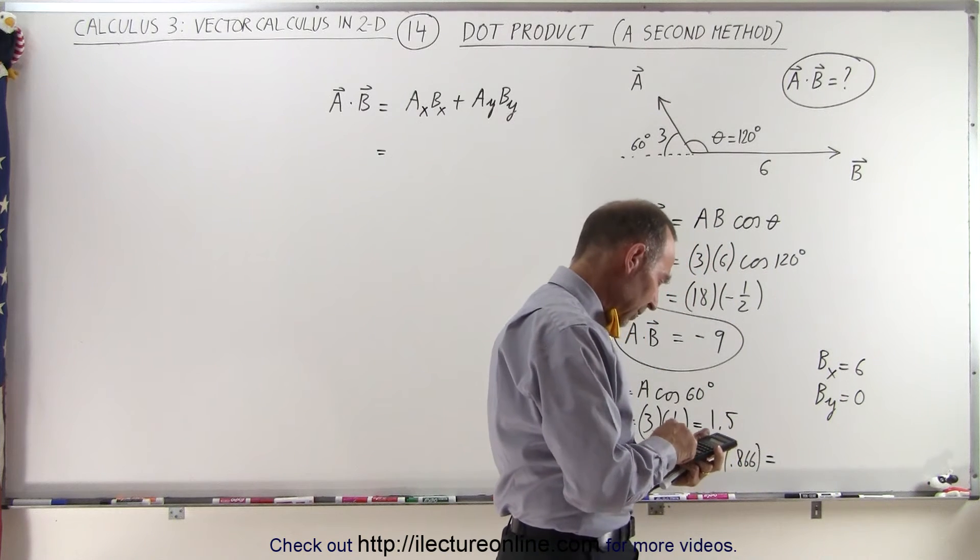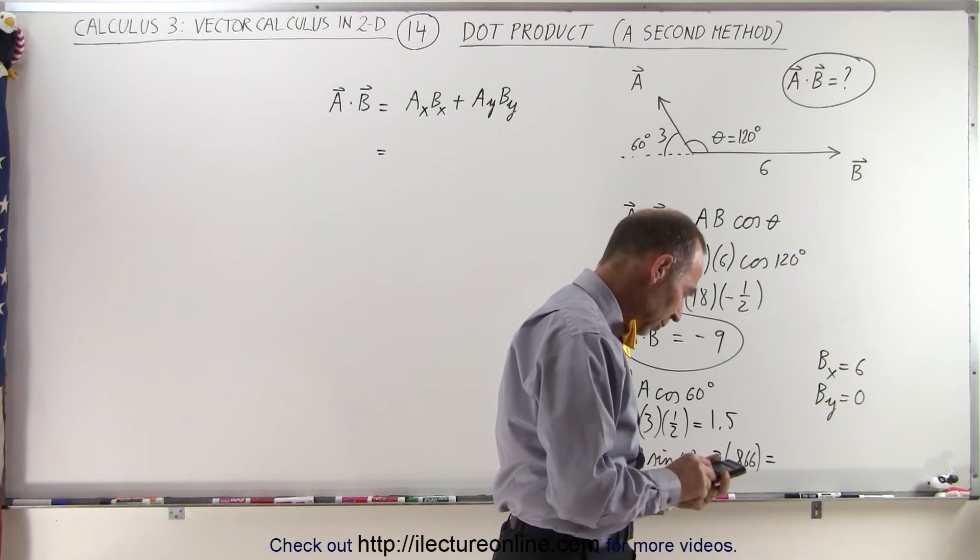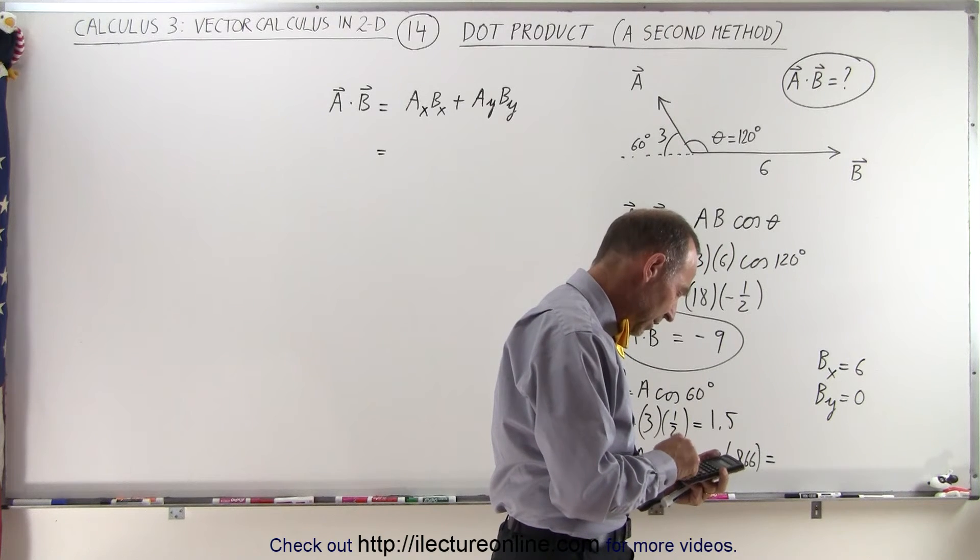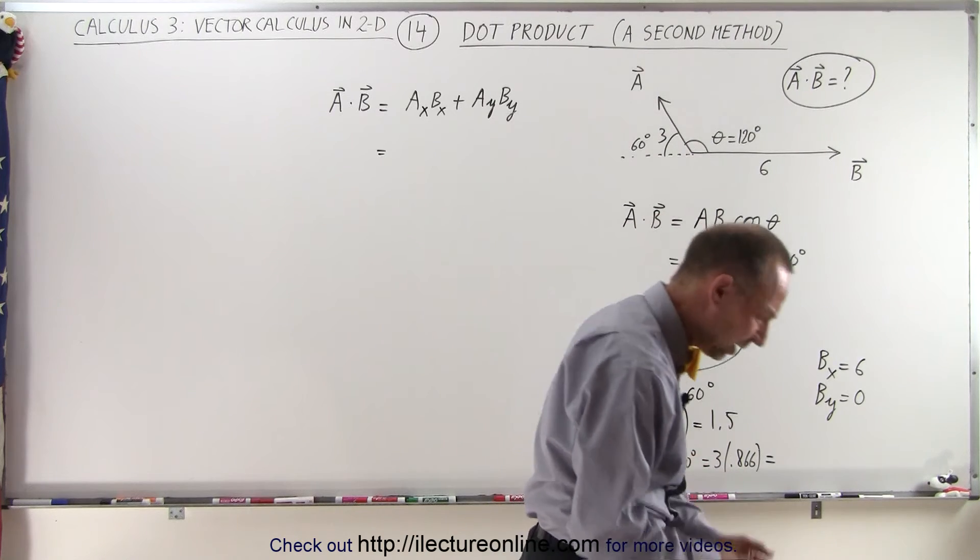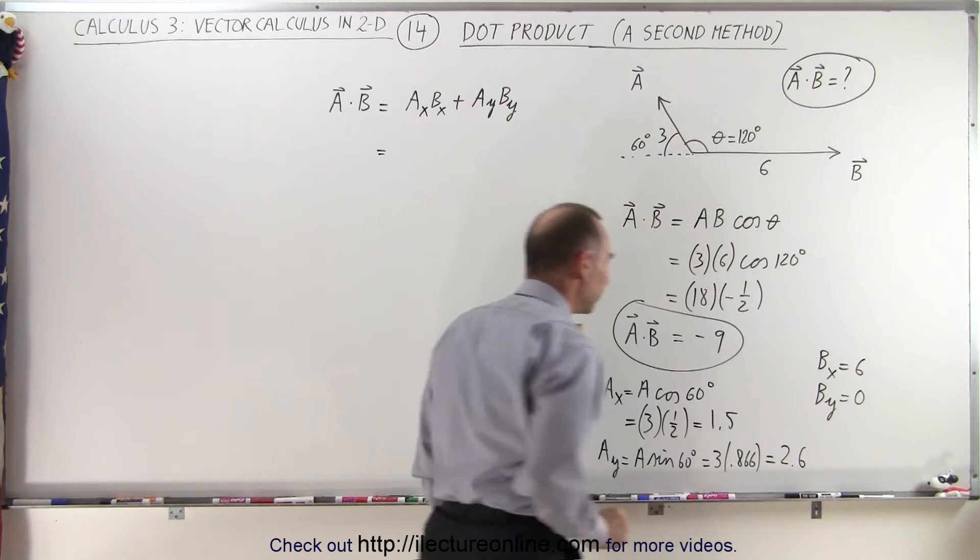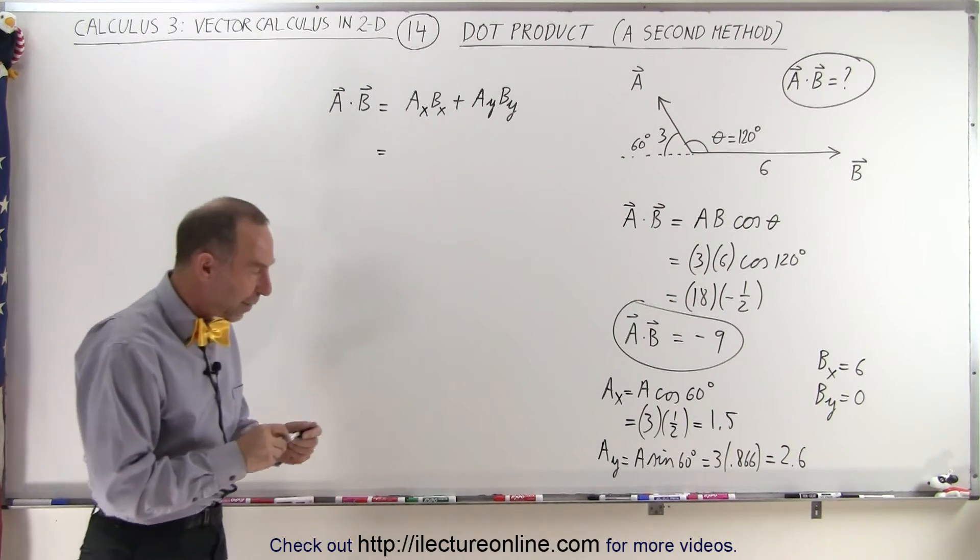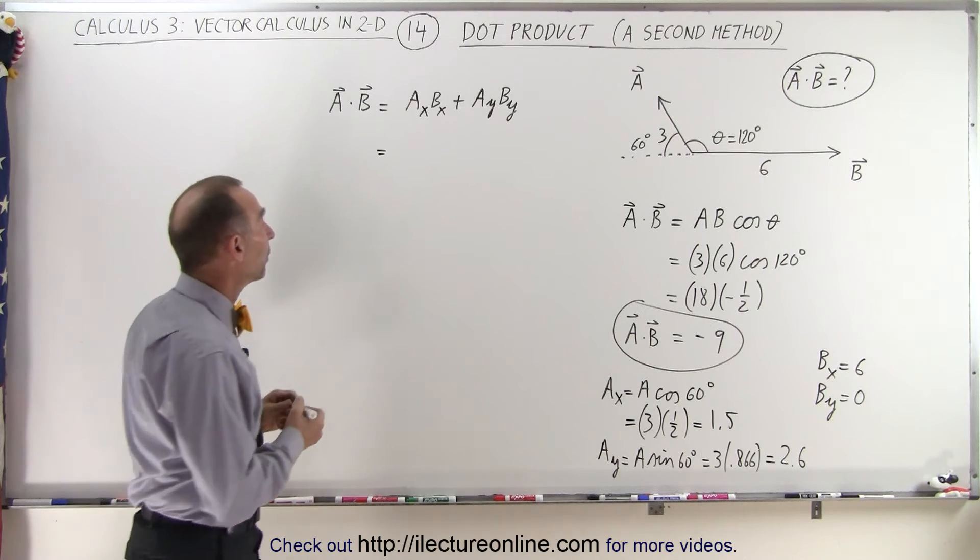So we have 0.866 times 3 equals—let me try that again—0.866 times 3 is 2.6. Close enough. All right. So now we have all the components for A and for B, so let's go ahead and apply it here.